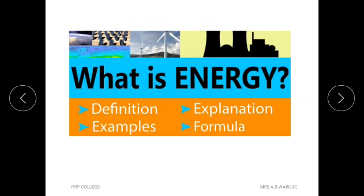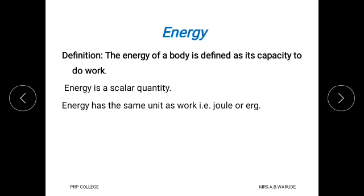First, we see what is meant by energy. We know that to do some work, we require energy. The definition of energy is: it is defined as the capacity to do work. That means for performing any work, a person's ability — that energy — is different for everyone. Energy is a scalar quantity; it does not require direction, only magnitude. Energy has the same unit as work, which is joule or erg.